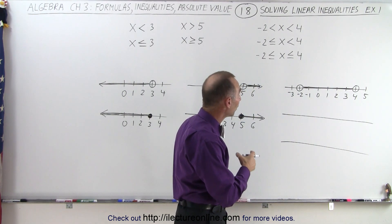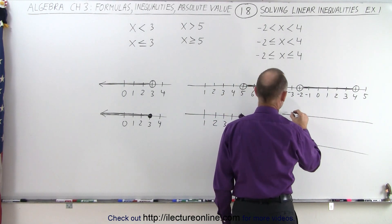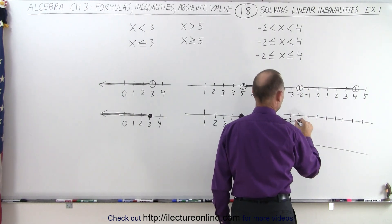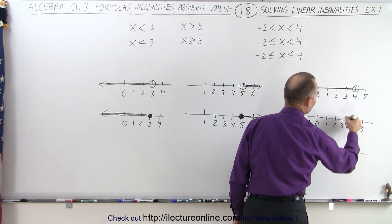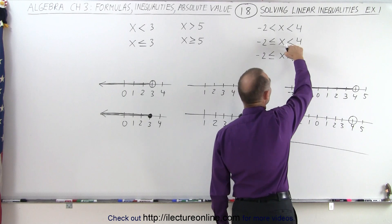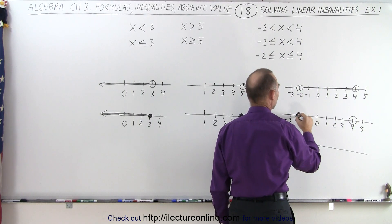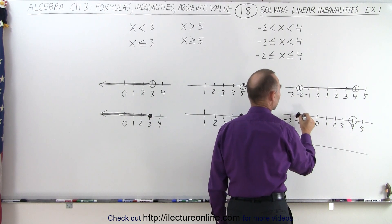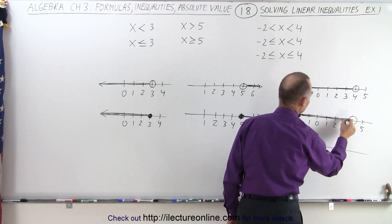But if the left point, negative 2, is included, we do the same thing. This is still a hollow circle because it does not include the number 4, but this is a solid circle because we include negative 2 and all the numbers in between.